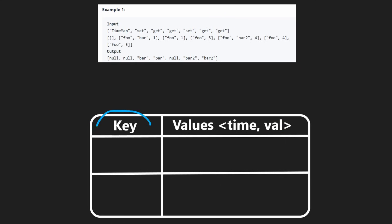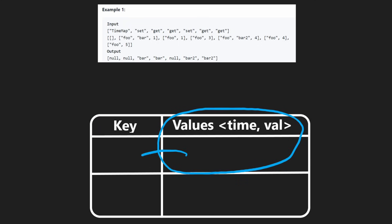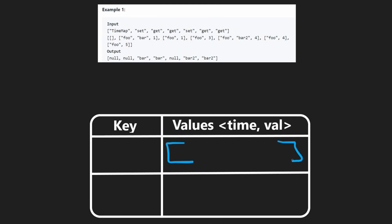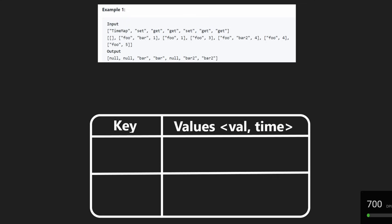So it's kind of like a hash map. We're going to have some key and then a value associated with that key. But we're actually not just going to have a single value — we're going to have a list of values. And in that list, we're going to have a pair of values. So each value is going to have a timestamp associated with it.